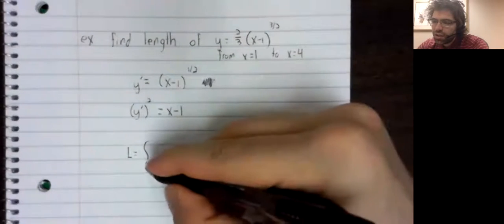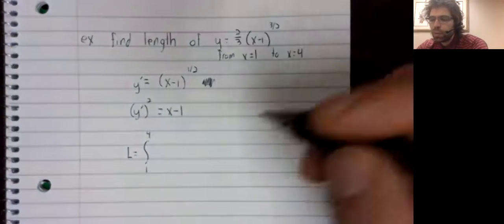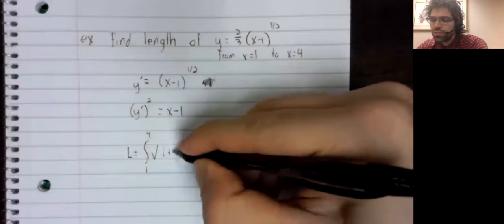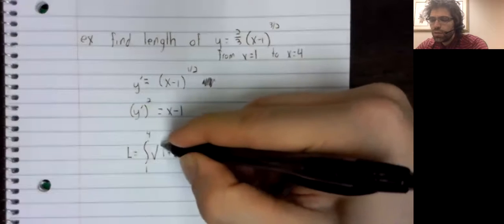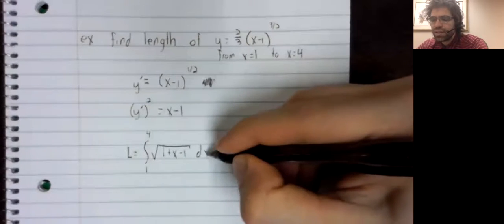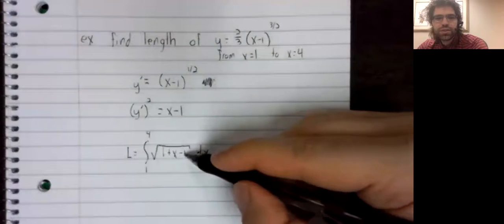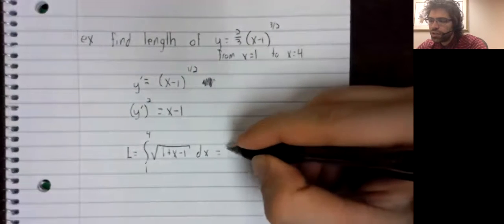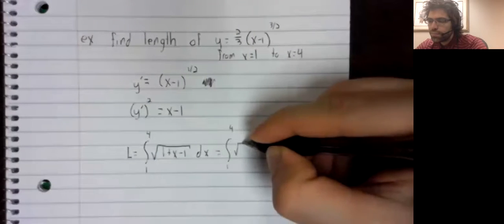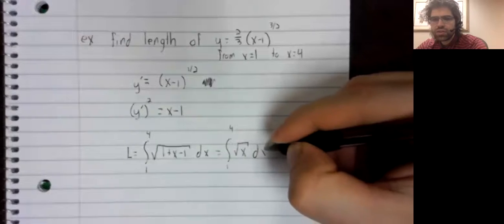And the arc length is the integral from 1 to 4 of the square root of 1 plus the derivative squared. And this 1 and this negative 1 can, of course, cancel.